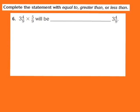Now let's take a look at question number 6. The directions say complete the statement with equal to, greater than, or less than. For question 6, they give us the problem 3 and 4 ninths times 5 ninths, and we have to decide: will the product of these two numbers be equal to, greater than, or less than the factor 3 and 4 ninths?